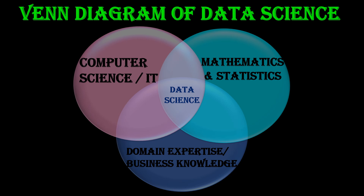The intersection of computer science and mathematics is machine learning — applying computational techniques to learn patterns from data and make predictions or decisions without explicit programming. The intersection of computer science and domain expertise is data engineering — ensuring data is accessible, reliable, and properly formatted for analysis. The intersection of mathematics and domain expertise is traditional research — applying statistical techniques to derive insights within a specific domain. This Venn diagram is a simplified yet powerful visualization of how diverse skills come together to form the multifaceted field of data science.